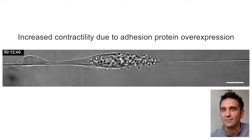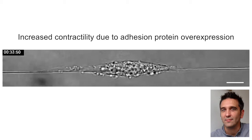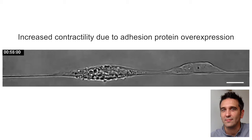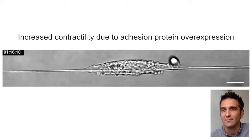When the contractility of the cell is too high, due to formin polymerization making stress fibers and contractile forces, hydrostatic pressure increases in the cell and you get this sort of exploding structure at the front that forms and explains this type of behavior.